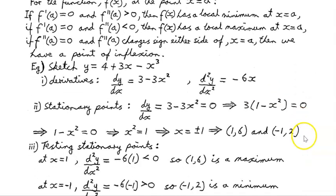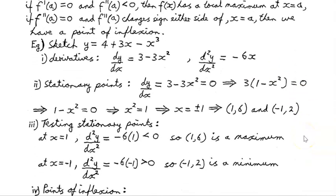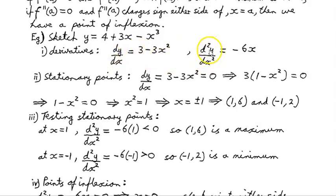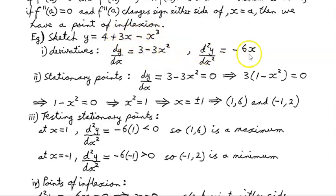Let's work through an example — sketch y equals 4 plus 3x minus x cubed. The first derivative, dy/dx, is 3 minus 3x squared. The second derivative, f double dash of x, or d²y/dx², is minus 6x. That's straightforward: derivative of 3 minus 3x squared gives 0 minus 6x.